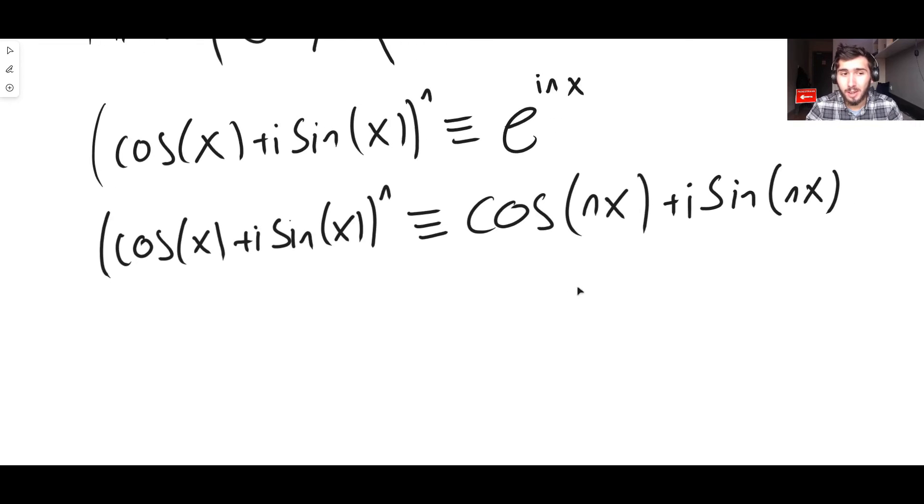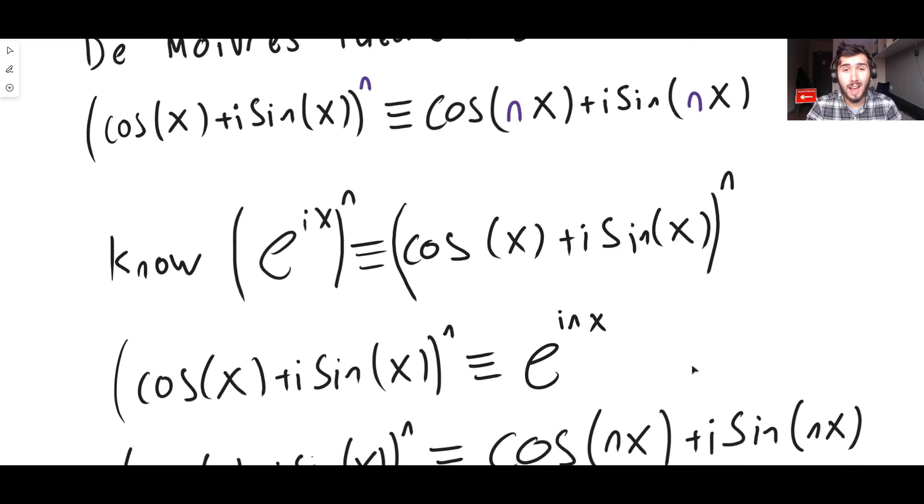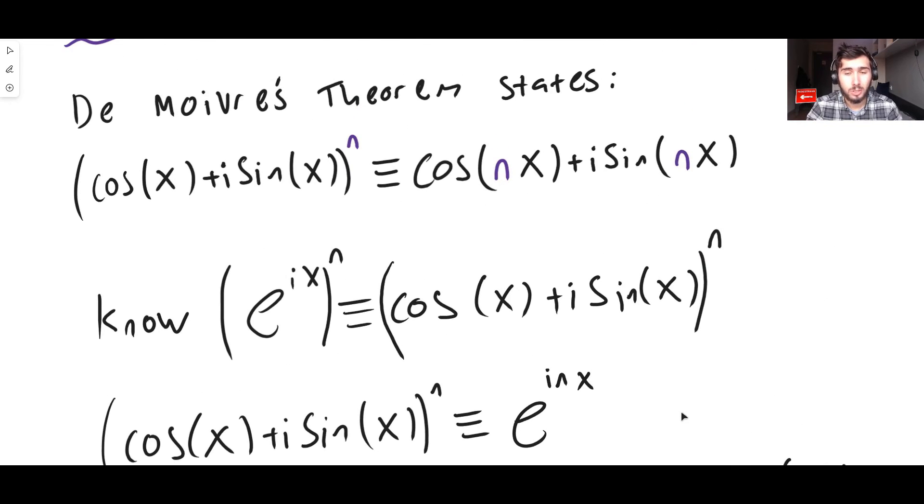And if you actually look at that, cos x plus i sine x to the power of n is identical to cos n x plus i sine n x. That actually is De Moivre's theorem. We're finished. That's it. That's everything.